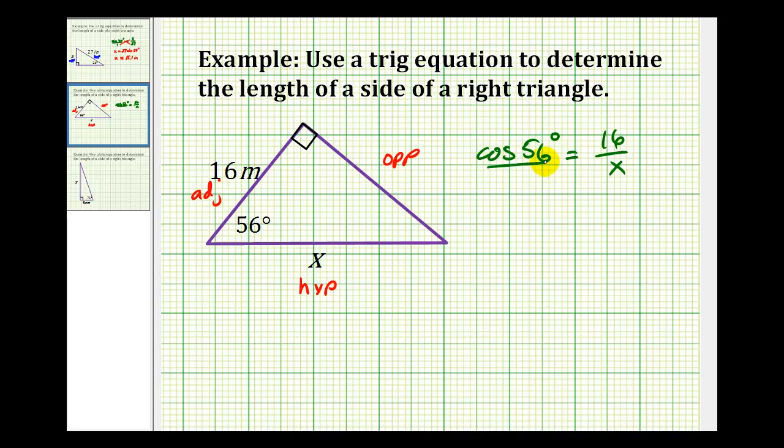Let's make this a proportion, and now we can cross multiply. X times cosine 56 degrees equals 16 times 1, which is 16.